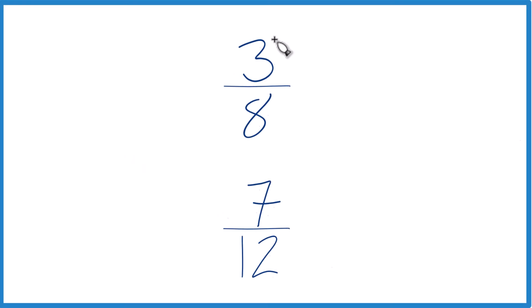So let's see if we can figure out whether 3/8 or 7/12 is greater. We can do it a few ways. One is we could just divide 3 by 8 on a calculator, get a decimal, and then 7 by 12 on a calculator, get a decimal, and compare them.